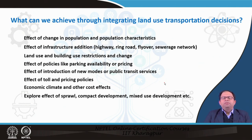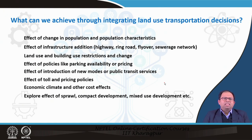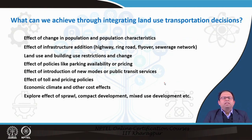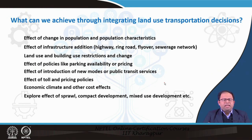What can we achieve through integrating land use and transportation? When we are doing a land use transportation model, why should we not just determine traffic flows on a particular street? We need to determine the change in land use pattern, change in building use pattern, and change in all connected systems. This is required because only then can we say what would be the effect of change in population and population characteristics on these connected systems.